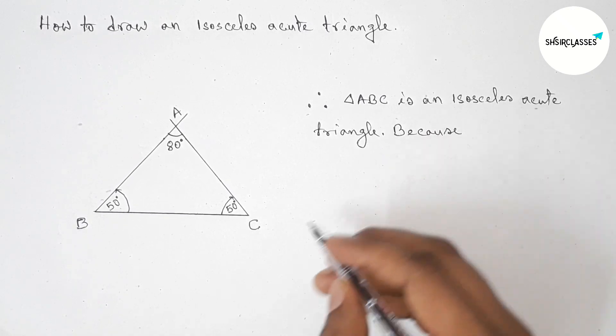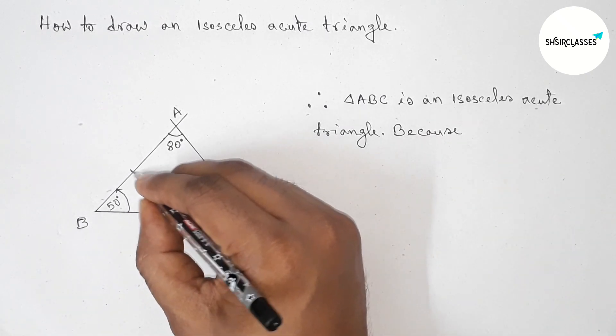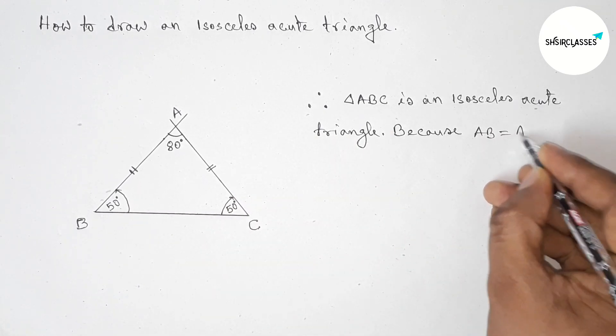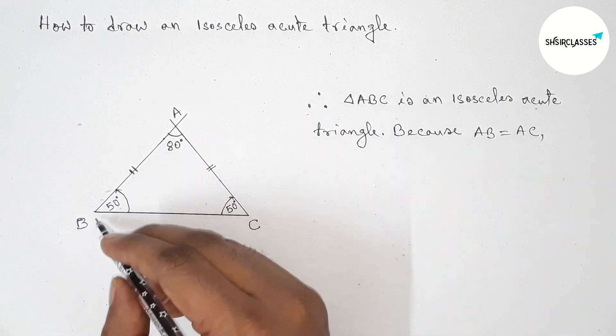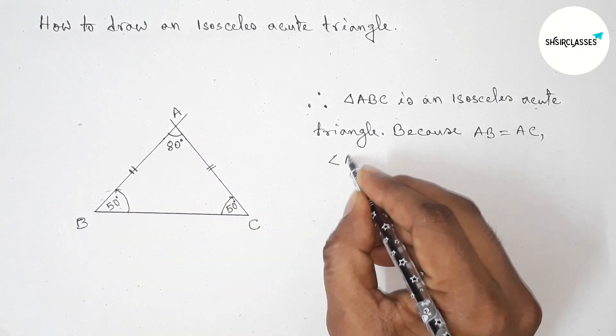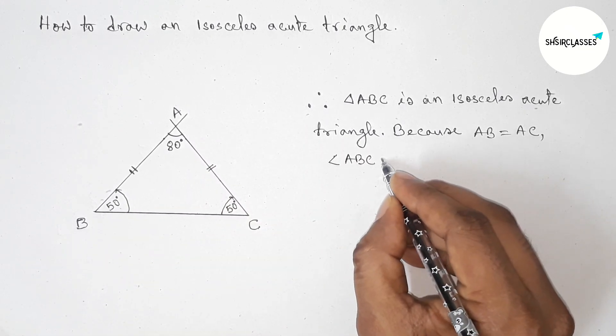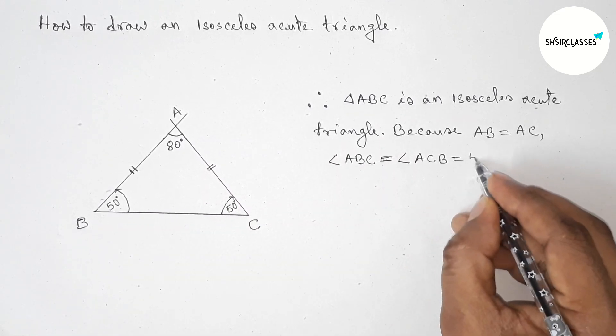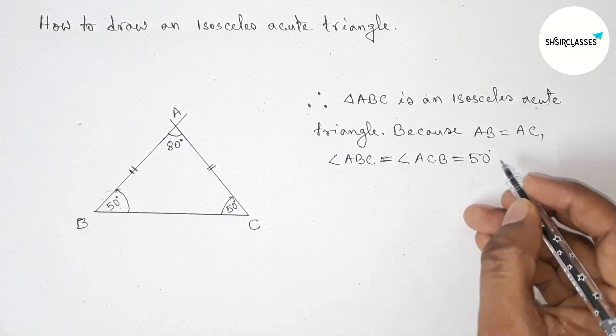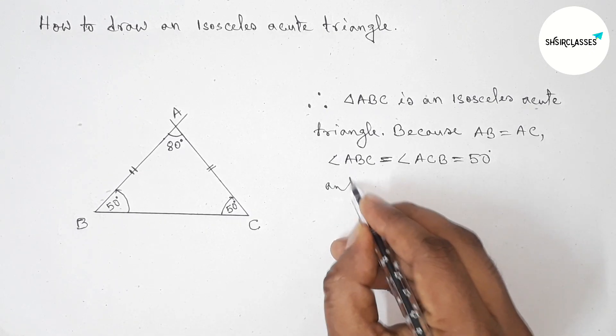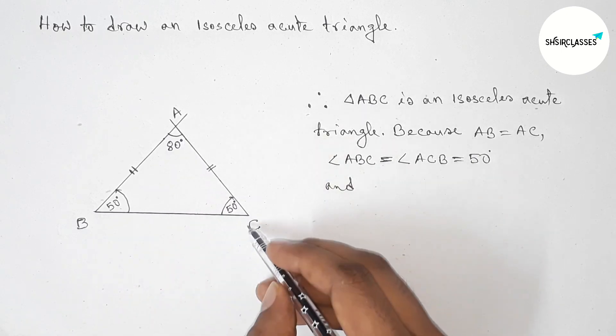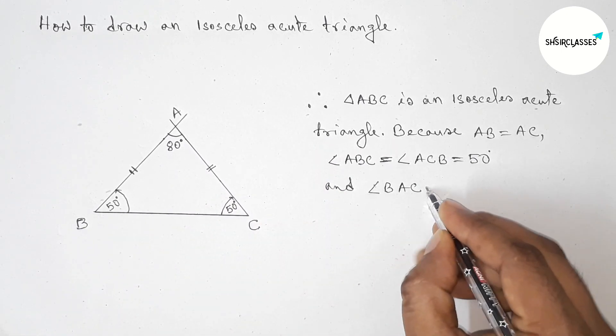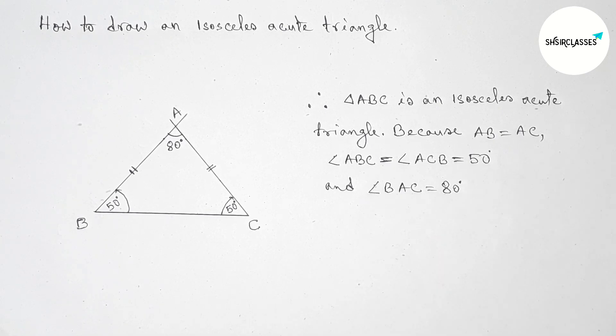here the side AB and AC are obviously both equal because both the angles are equal. So angle ABC is equal to angle ACB, both angles are 50 degrees. So we can say that it is an isosceles triangle, and also angle BAC is 80 degrees.